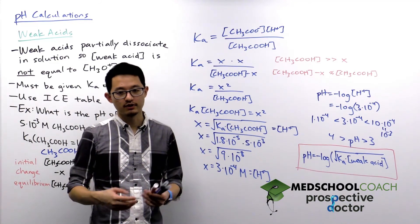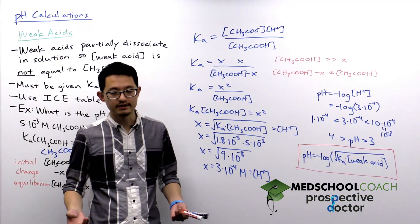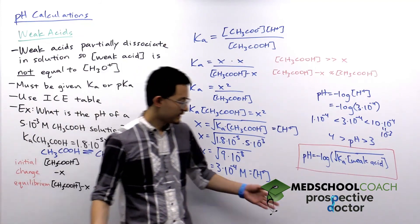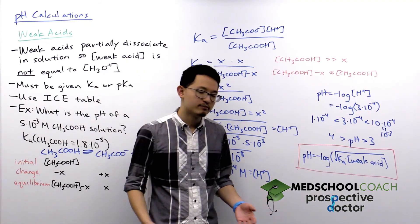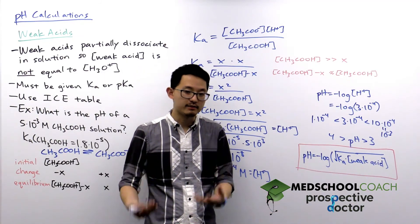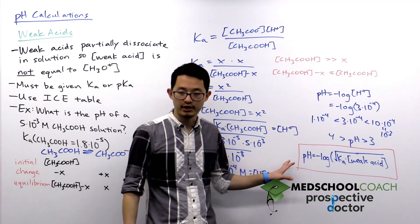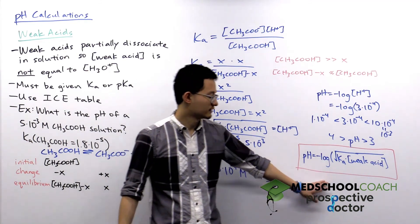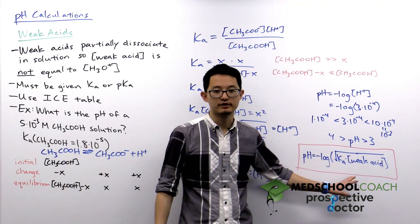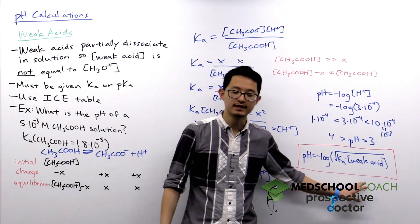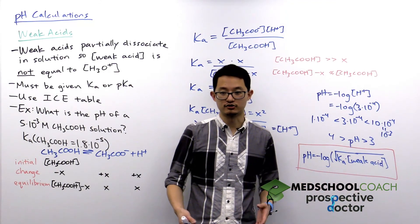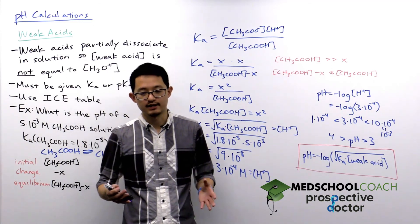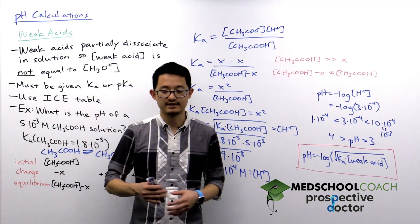We're not going to show weak bases in detail, but weak bases work essentially the same way — except instead of calculating pH, you calculate pOH. So: pOH = −log(√(Kb × [weak base])). It works the same way, just with the base instead of an acid.